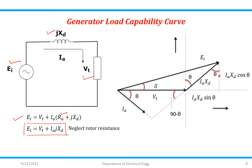If I draw a dotted line, what it indicates: this will be your IA·XT·cos θ. Because if you see here, this is your theta — so the adjacent component is IA·XT·cos θ. And the opposite component is IA·XT·sin θ.